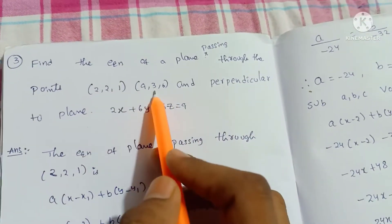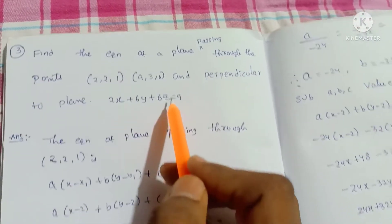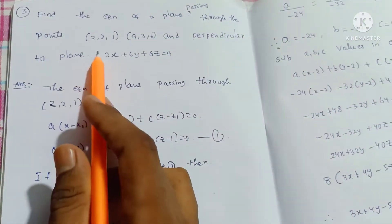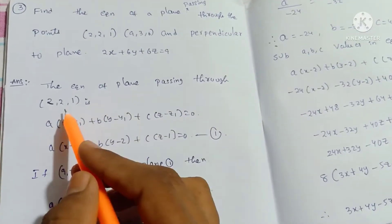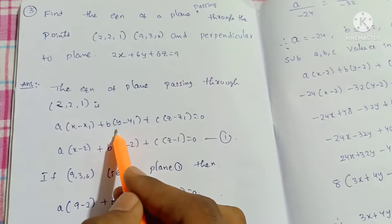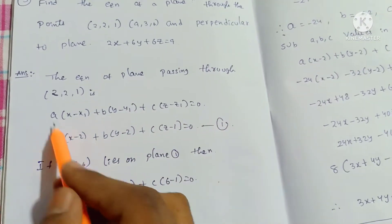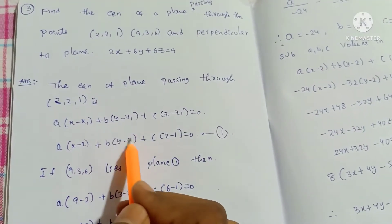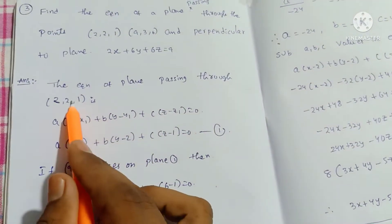If you have two points and a plane perpendicular to the given plane, then you can find the answer. The equation of a plane passing through the first point (2, 2, 1) uses the formula: a(x minus x1) plus b(y minus y1) plus c(z minus z1) is equal to 0. So a(x minus 2) plus b(y minus 2) plus c(z minus 1) equals 0. This is equation 1.